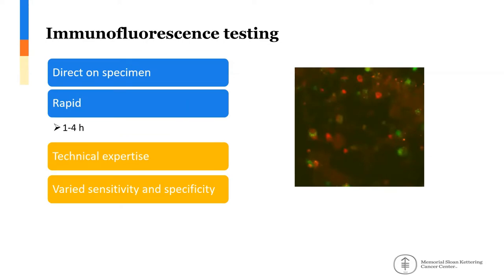There are also immunofluorescence assays — antigen-based methods done directly on specimens. They are more rapid than culture methods, taking one to four hours. However, the issue remains technical expertise — these are sophisticated methods requiring fluorescent microscopes and trained technicians. There is also varied sensitivity and specificity depending on the integrity of the specimen and the type of virus being tested.